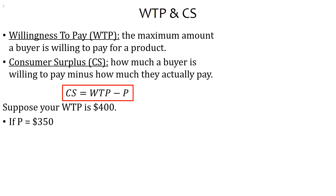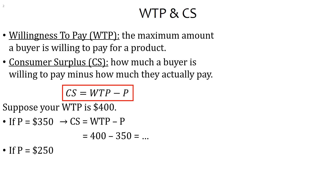If the price is $350, your consumer surplus is WTP minus P: $400 minus $350. Do the math — you don't need a calculator. If the price is $250, compute the consumer surplus following the same procedure. And if the price is $100, compute it again. You'll see what happens to your consumer surplus as the price goes down.